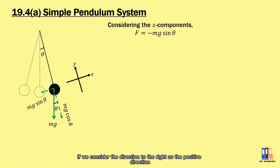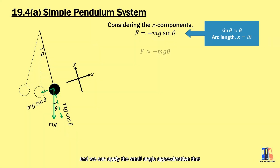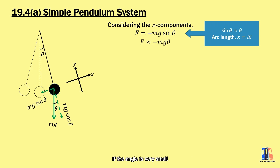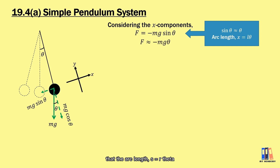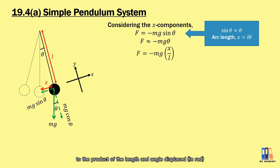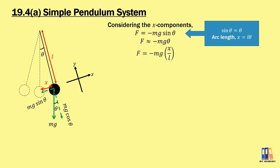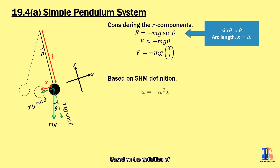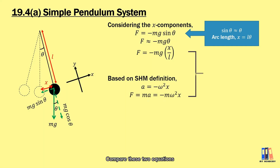If we consider the direction to the right as the positive direction, the net force is equal to mg sin θ. We apply the small angle approximation that sin θ ≈ θ in radian form when the angle is very small. From circular measure, the arc length s = rθ, so the displacement (which is also the arc length) equals L multiplied by the angle displaced. Substituting, the force equals −mg·x/L. Comparing with the SHM definition F = −mω²x, we obtain ω² = g/L.